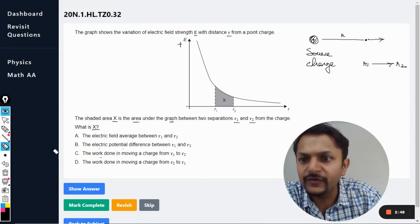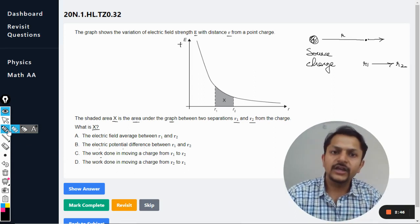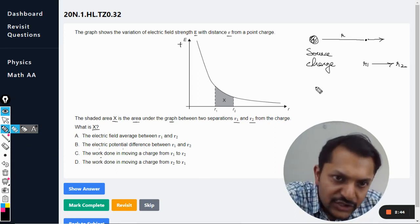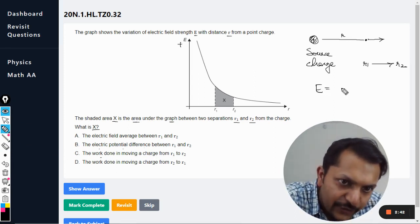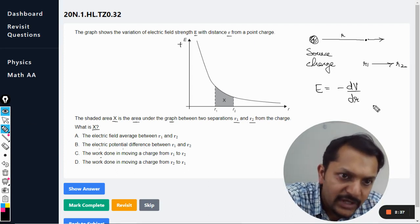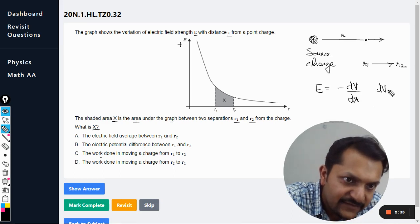We know that there is this formula: E is equal to minus dV by dr. From here I can say dV is equal to minus of E dot dr.